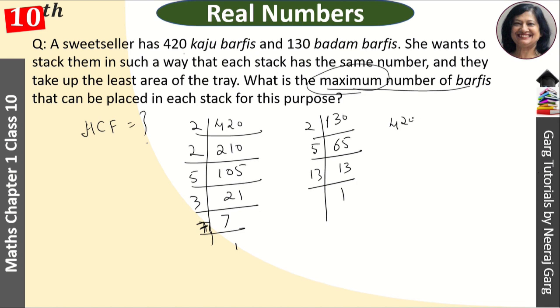What is 420 equal to? 2 into 2 into 3 into 5 into 7. Now, what is the highest common factor? The common factors are 2 and 5.